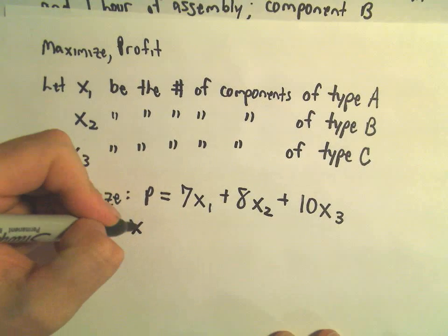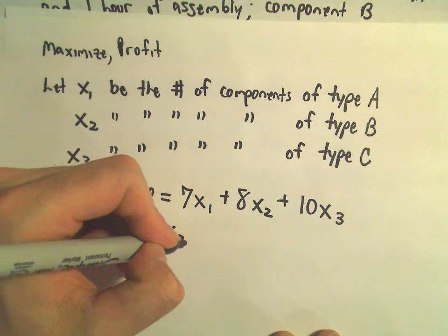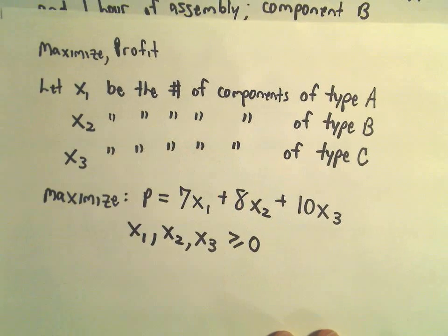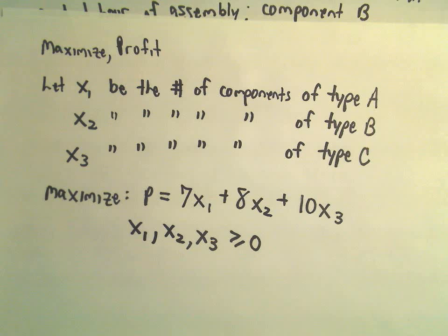Each one of x₁, x₂, and x₃ are going to have to be greater than or equal to 0. We've got to make 0 or more of each type of component.